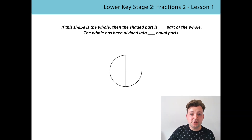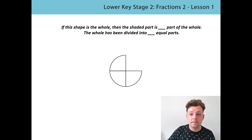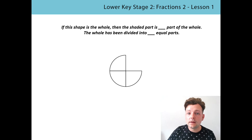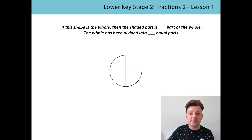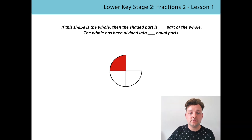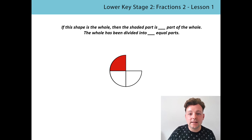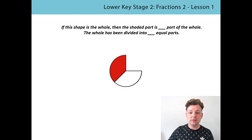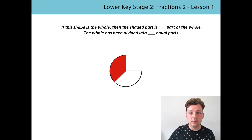This time we have a bit of a different shape. Be careful — some people think this is a circle, but there's a missing part of where the complete circle would be. So this is going to be our whole shape. Can you see how many equal parts we have? There are three equal parts. So if this shape is the whole, then the shaded part is one part of the whole. The whole has been divided into three equal parts. Pause the video and have a try at saying that stem sentence yourself. If this shape is the whole, then the shaded part is one part of the whole. The whole has been divided into two equal parts. Pause the video and try the stem sentence yourself.